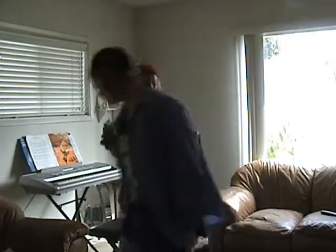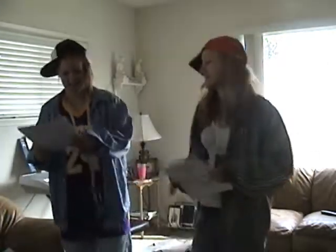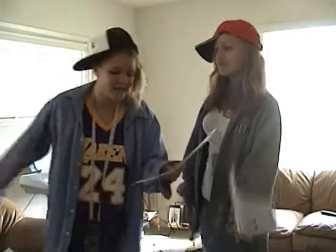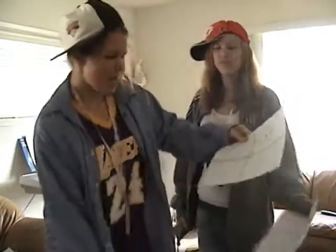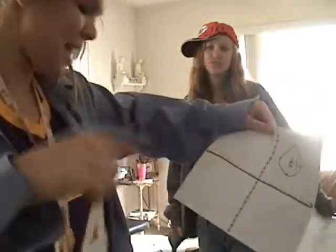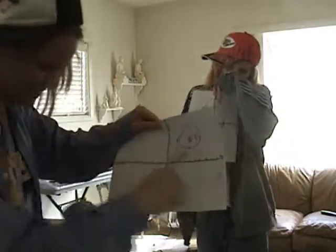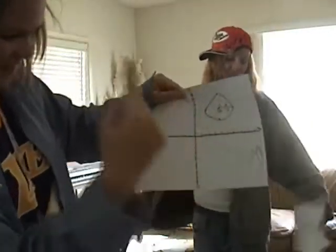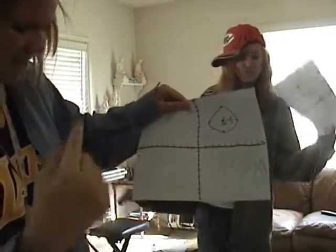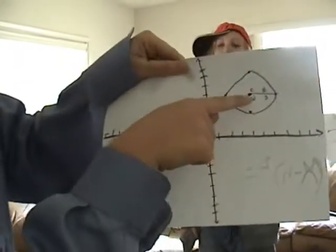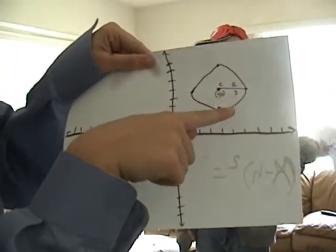Yeah, look at this bling. You see this? You see these ice creams? Yeah. X minus H squared plus Y minus K squared equals R squared. In the end, she got the X. X minus 4 squared plus Y minus 6 squared equals 9.